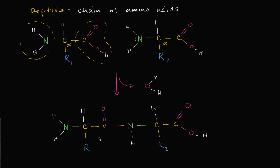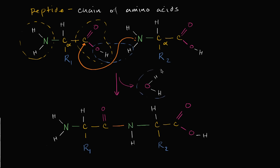A very high-level overview of this reaction is that this nitrogen uses its lone pair to form a bond with this carbonyl carbon right over here. So this lone pair goes to this carbonyl carbon, forms a bond, and then this hydrogen and this oxygen can be used net-net to form a water molecule that is released from both of these amino acids. You end up with the nitrogen being attached to this carbon and a release of a water molecule.